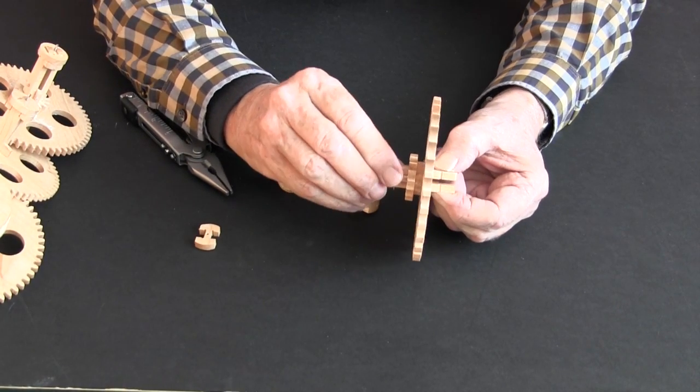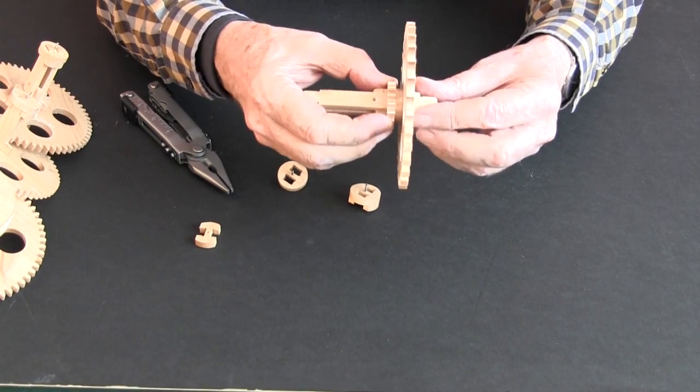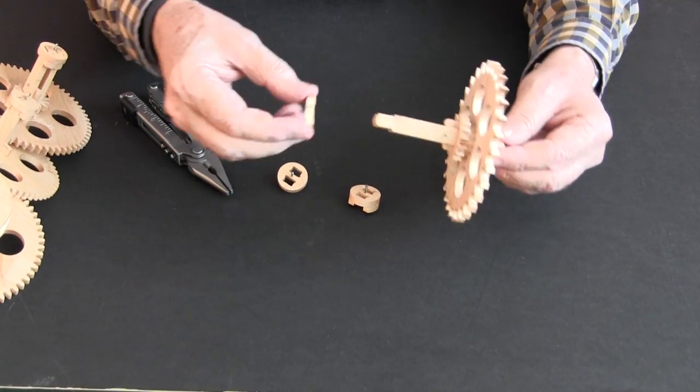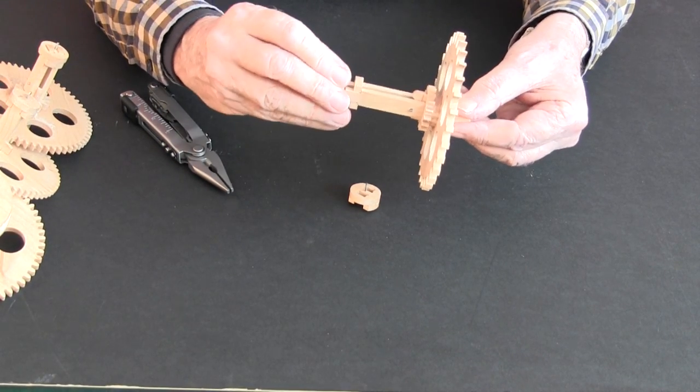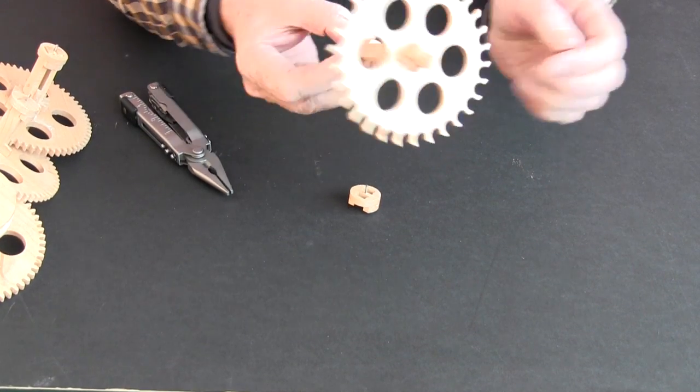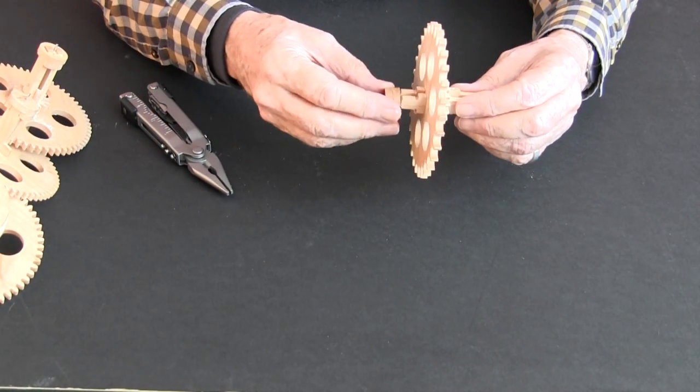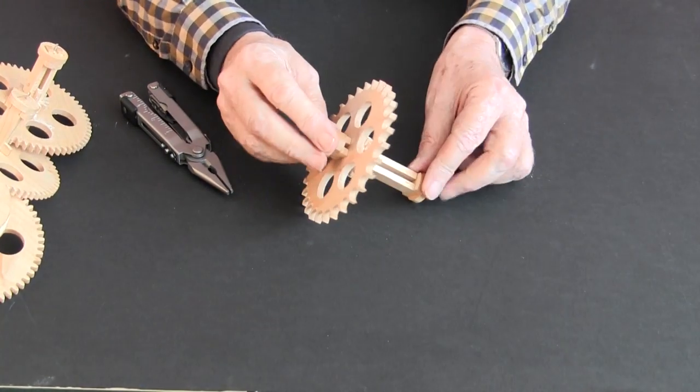Pushing the wedge into position locks all of those components tightly together. Now we can finish off by putting the end discs on with the pivot pins. And same at the back. And the assembly is complete.